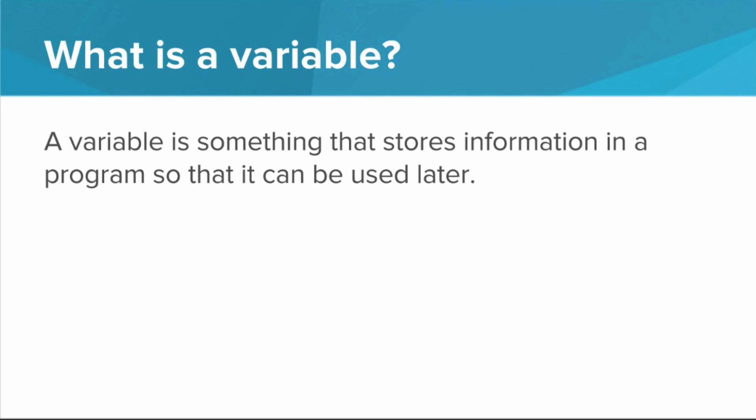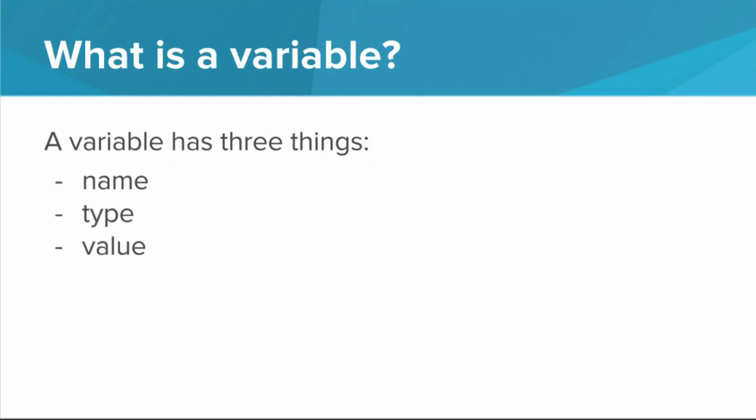That information can be something like hello world or the number 50. More specifically, a variable has three things: a name, a type, and a value.